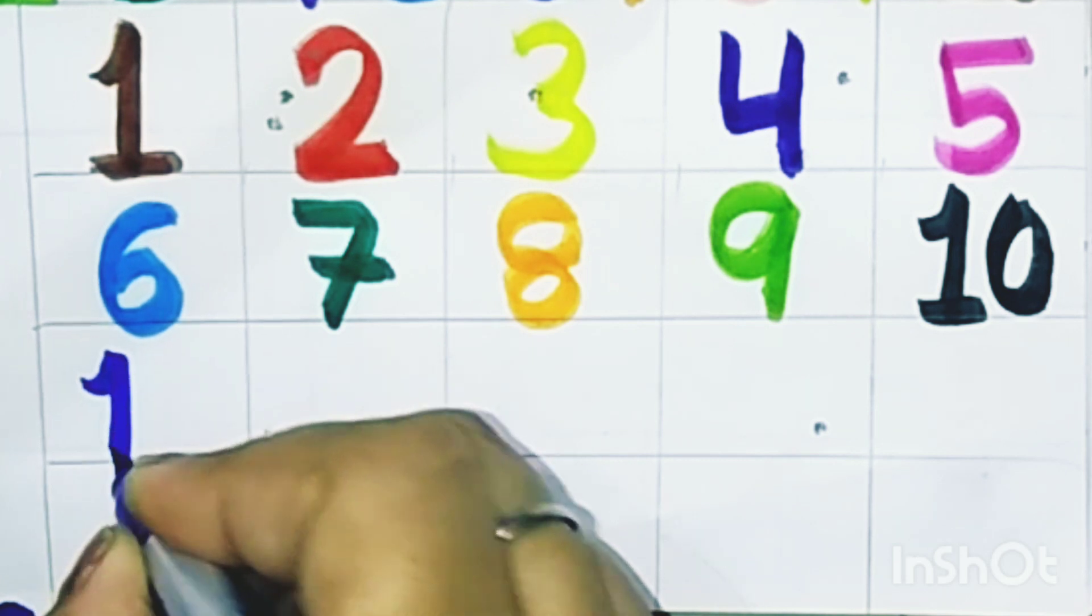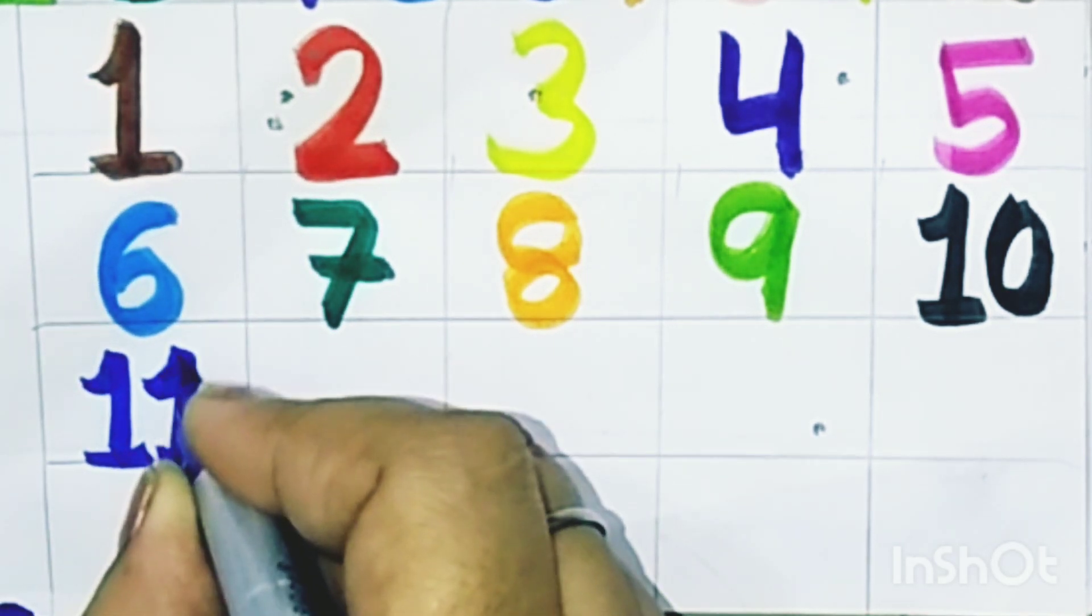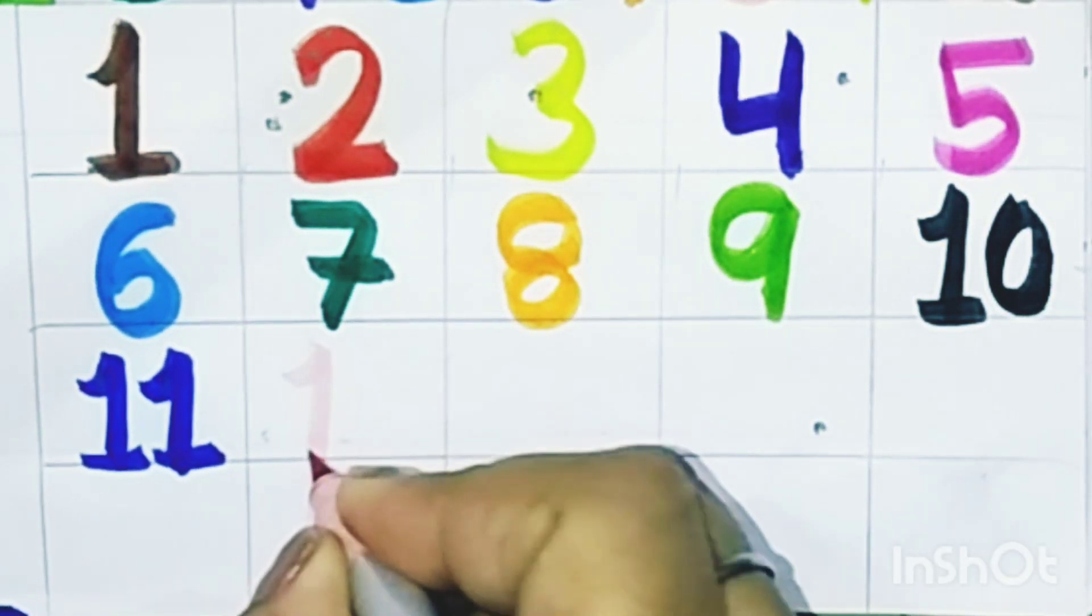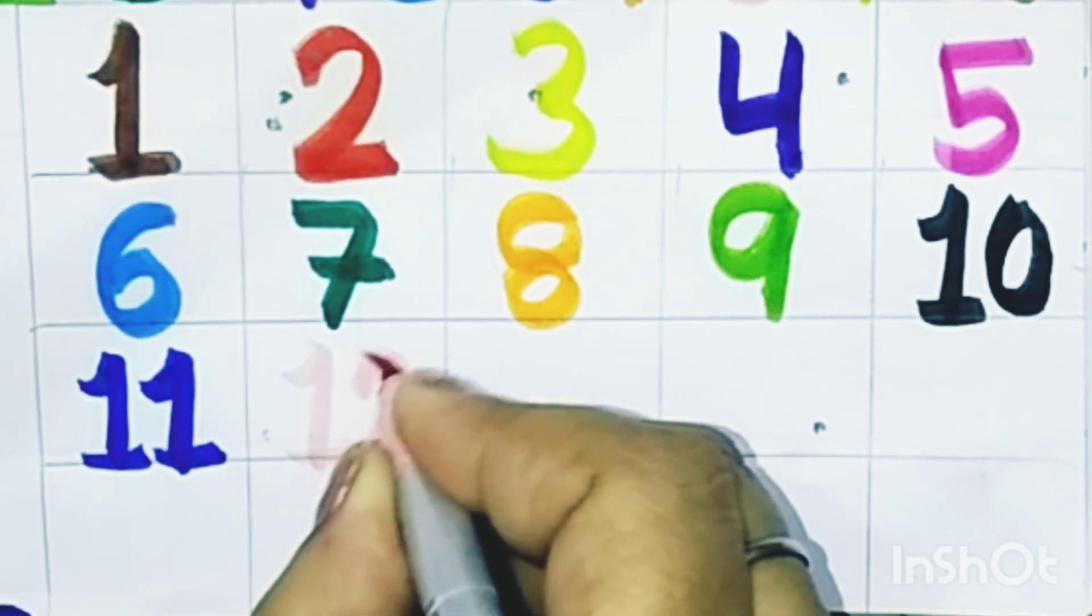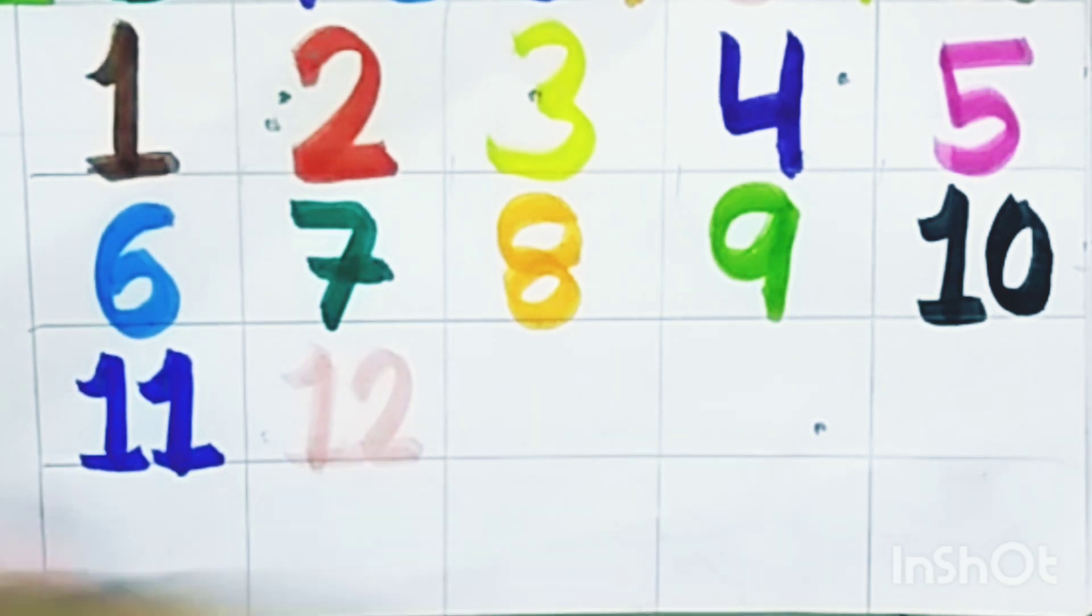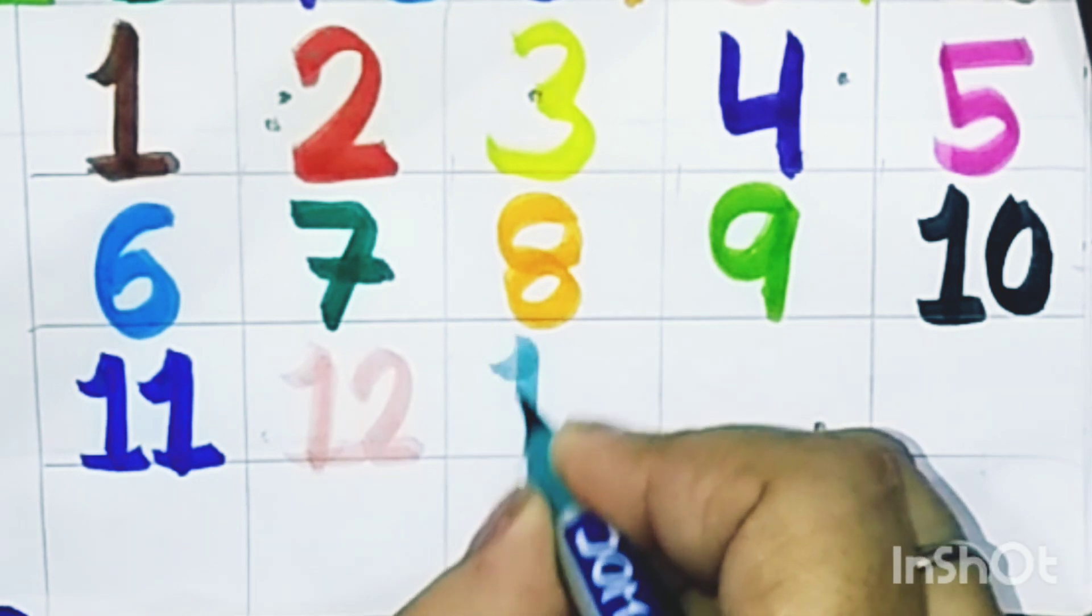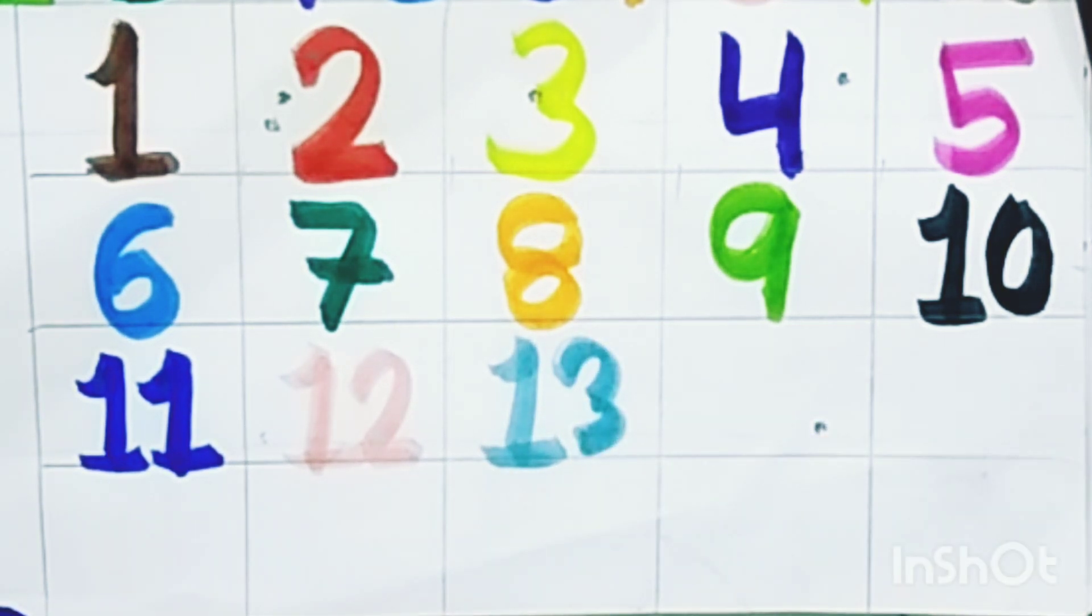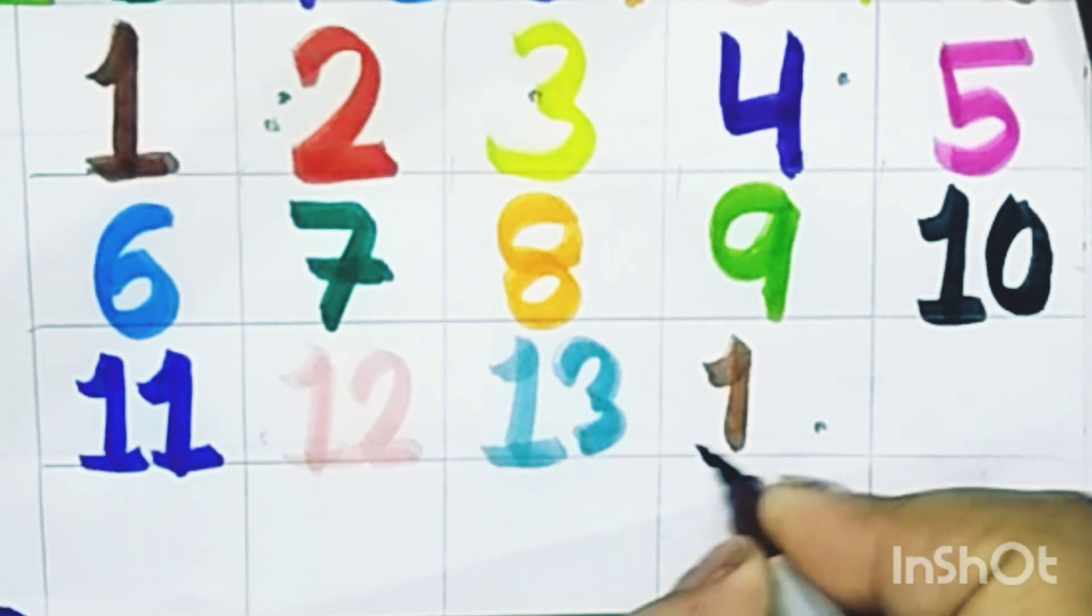One one eleven, one one eleven. One two twelve, one two twelve. One three thirteen, one three thirteen.